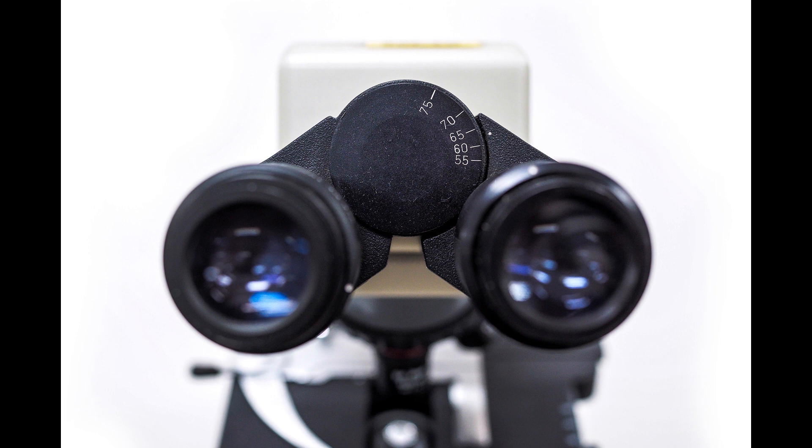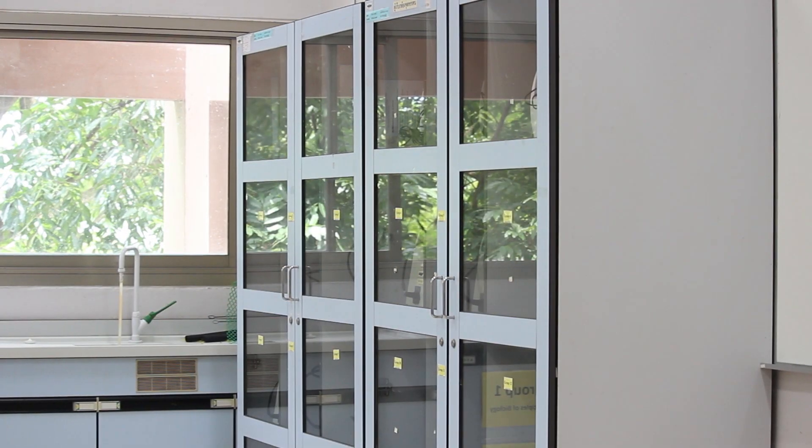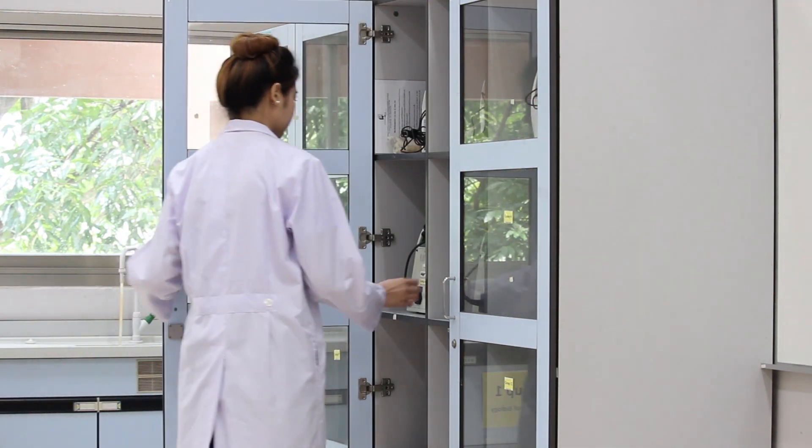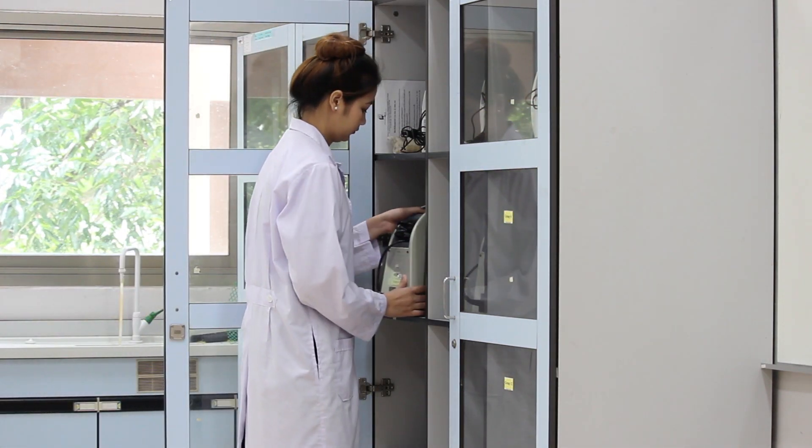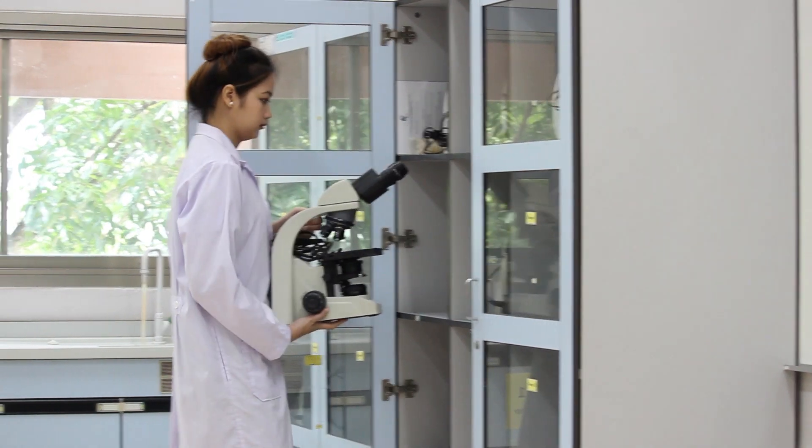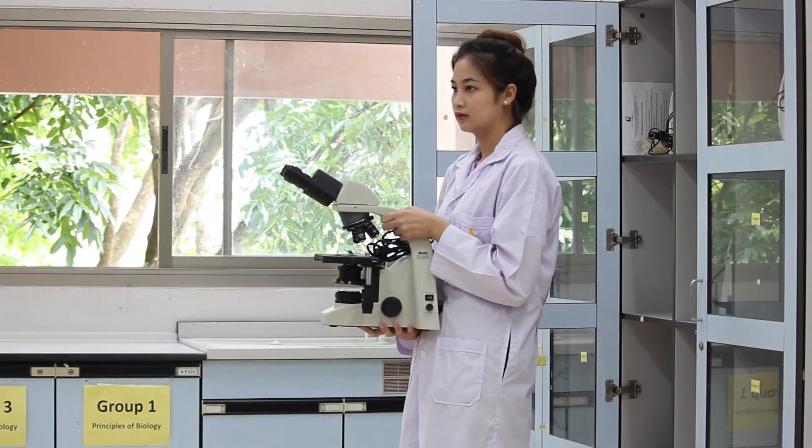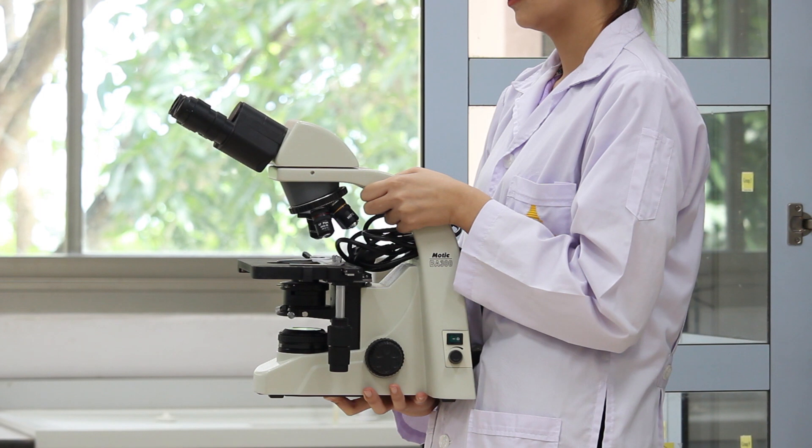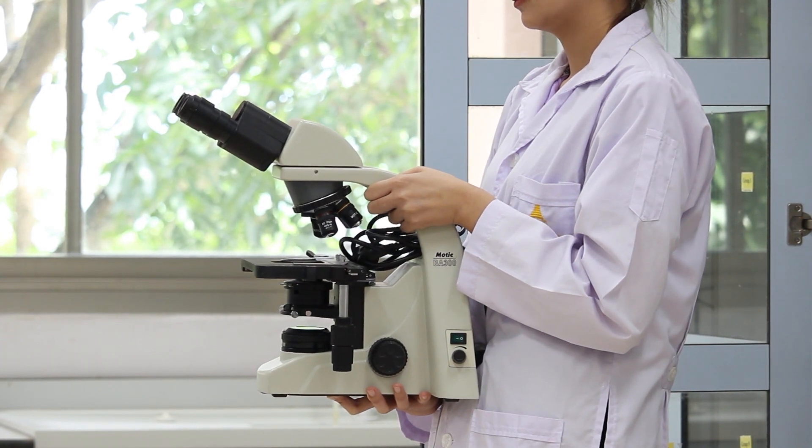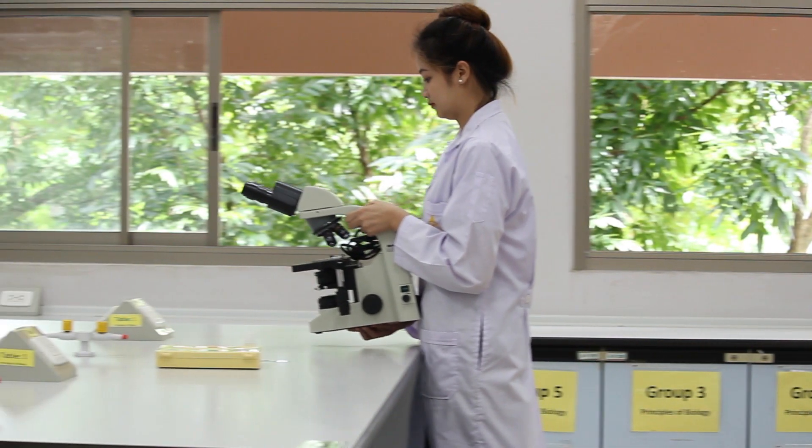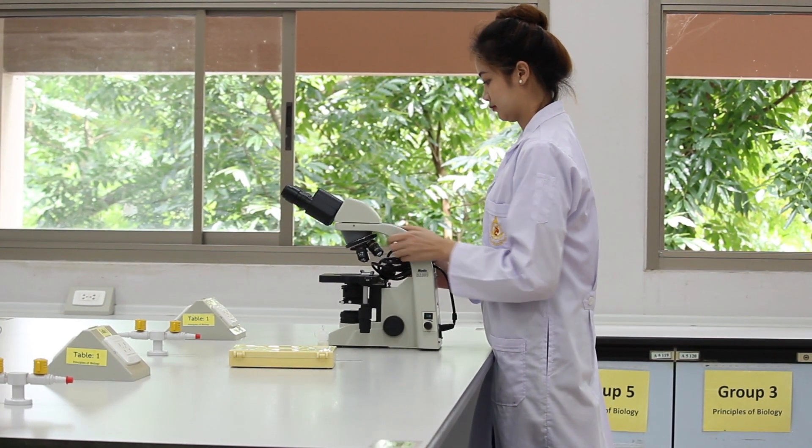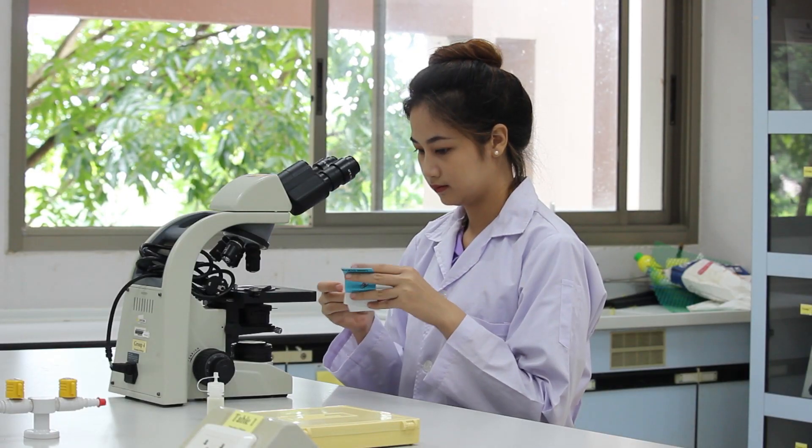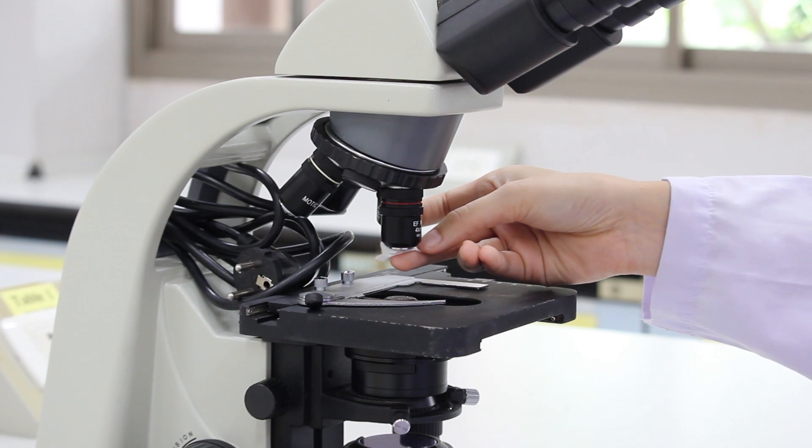Now, let's start with how to use the compound light microscope. First, carefully remove the microscope from its cabinet and carry it upright with one hand grasping the arm and your other hand supporting the microscope below its base. Then, place your microscope on the table. If it is necessary, clean the microscope's lenses with lens paper.